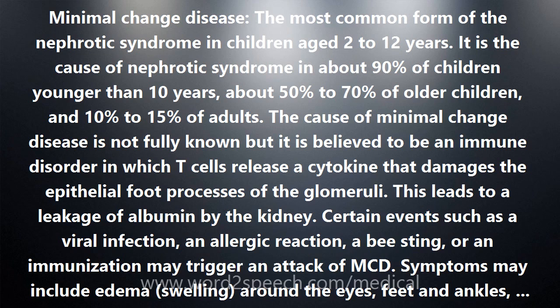Children who relapse frequently may be given a second type of drug called a cytotoxic agent. The agents most frequently used are cyclophosphamide, chlorambucil, and cyclosporine. After reducing protein in the urine with prednisone, the doctor may prescribe the cytotoxic agent. Treatment with cyclophosphamide and chlorambucil usually lasts for 8 to 12 weeks, while treatment with cyclosporine frequently takes longer.